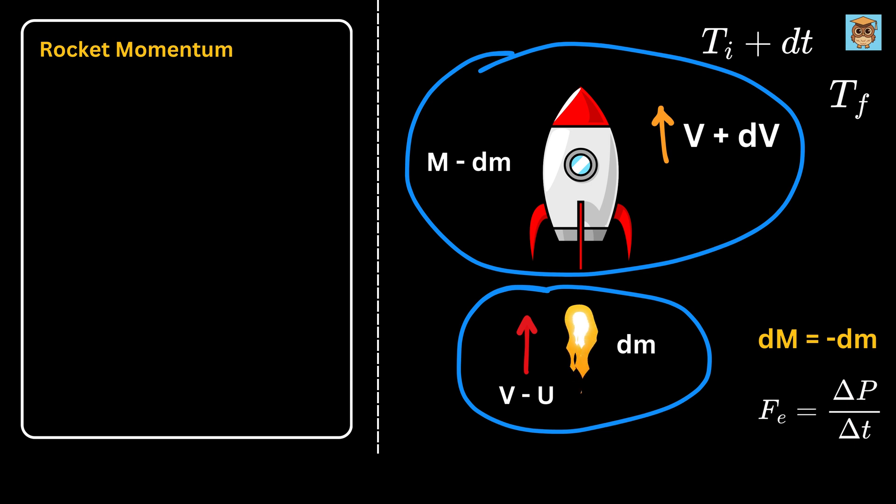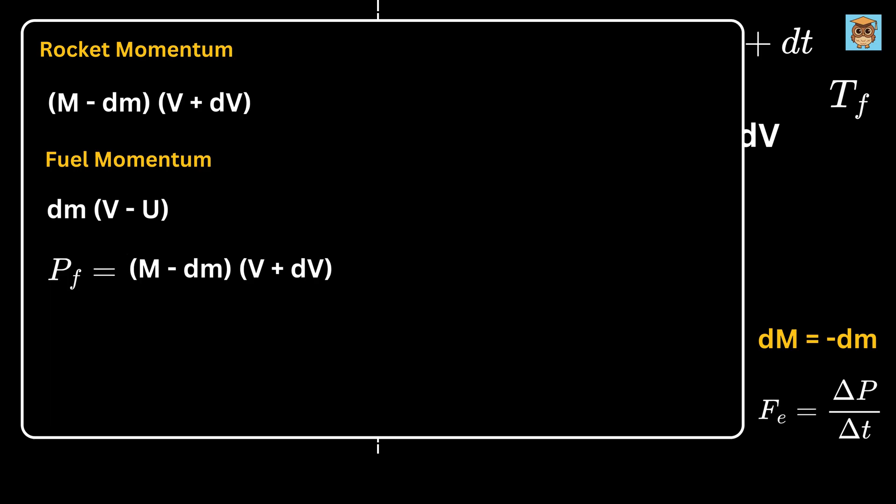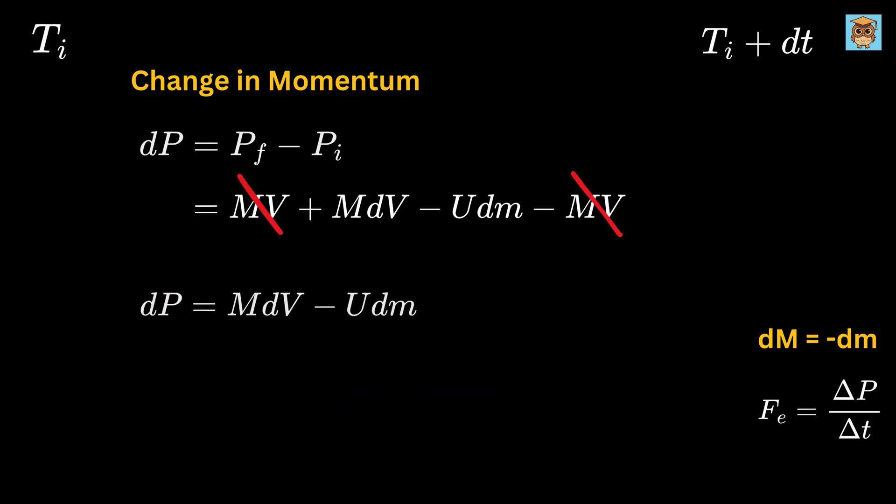The rocket's new momentum will be (M - dm) times (v + dv), then there's the gas's momentum dm times (v - u). So the total final momentum Pf will be this plus this. When we expand this we get Mv + M dv - v dm - dm dv, and expand this to get v dm - u dm. Both v dm terms cancel out. Also, dm dv is super tiny because they are simply two small changes multiplied together, so we usually ignore it. Hence we are left with Mv + M dv - u dm. Now what's the change in momentum dp? It will simply be Pf minus Pi. The Mv terms cancel out and we are left with M dv - u dm. That's how much the momentum changes in this small time interval dt.